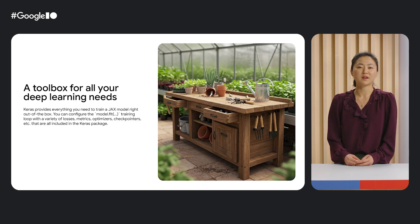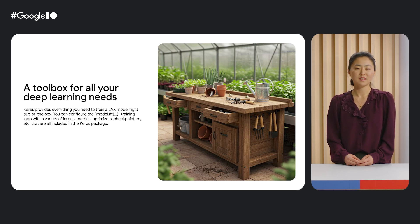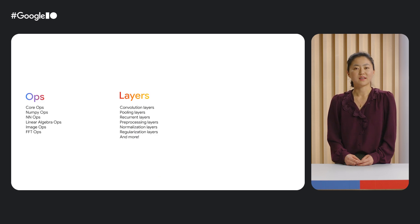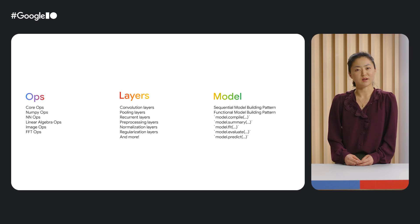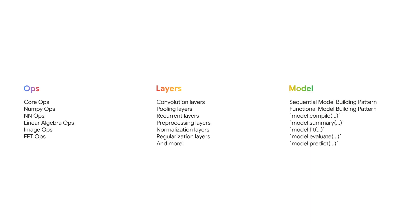Keras is a comprehensive toolbox for all your deep learning tasks. It provides everything you need to train a JAX model right out of the box. This includes the Model.fit training loop, as well as all the tools you need to configure that loop. For example, Keras supports many types of ops and layers. You can use these to build your model with the sequential or functional model building patterns. After that, you'll be able to use the Keras built-in model APIs, such as Model.compile to initialize your model, Model.fit to train your model, and my personal favorite, Model.summary to visualize the layers in your model.